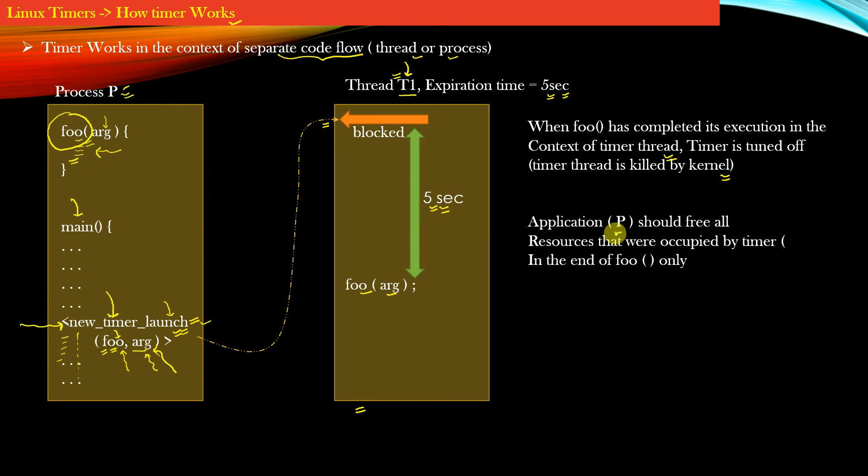Application P, that is the process P, should free all the resources that were occupied by timer in the end of foo function only.